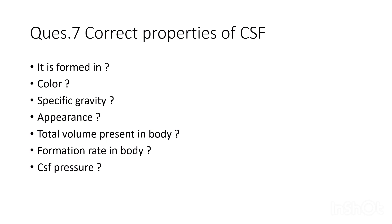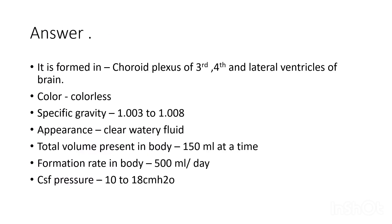Seventh question: correct properties of CSF. It is formed in the choroid plexus of the third, fourth, and lateral ventricles of the brain. Color: colorless. Specific gravity: 1.003 to 1.008. Appearance: clear watery fluid. Total volume in the body: 150 ml. Formation rate: 500 ml per day. CSF pressure: 10 to 18 cm H₂O in the lying position.